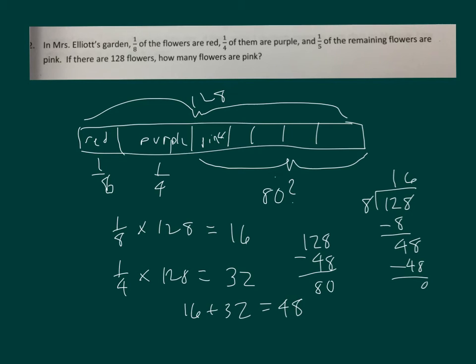So I have 80 flowers that are left over here. So I've got 80 flowers, and I'm taking 1/5 of 80. Take 80 divided by 5. I think it's also 16.